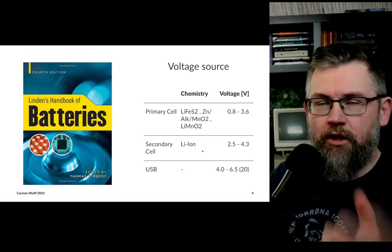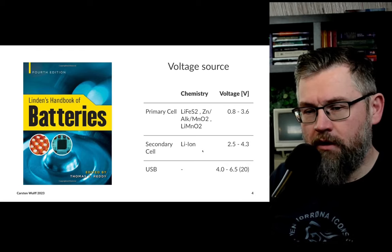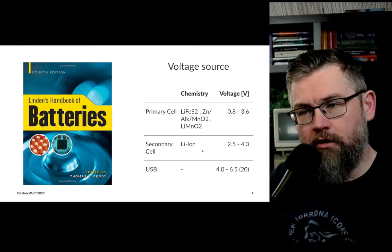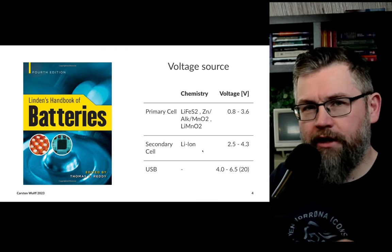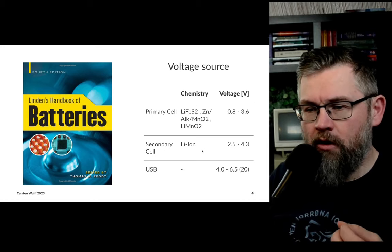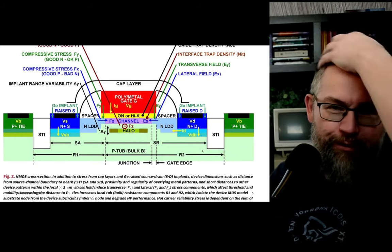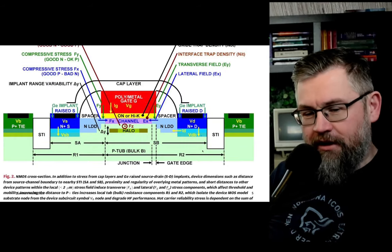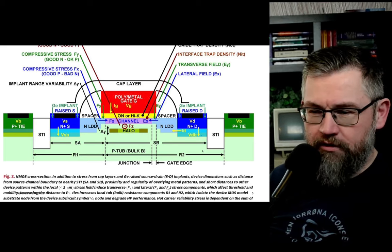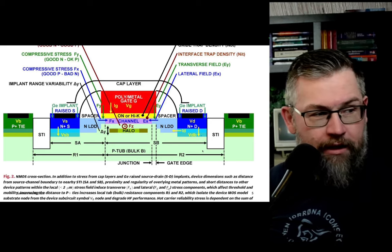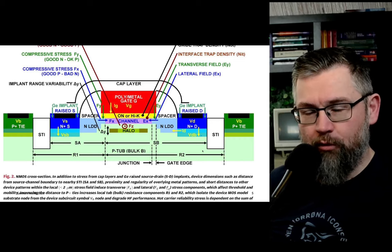Somewhere we have the energy source — a battery — and then we have our circuit. So why can't we just power the circuit directly from the battery? Here we get into the problem of transistors. Over the past almost 70 years, we've been incredibly good at making the transistor smaller and smaller.